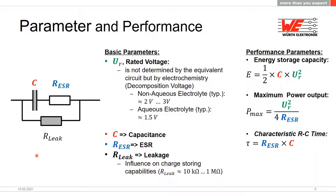The main parameters for an energy storage device are charging and discharging times, as well as power and energy capacity. The rated voltage defines the output power and is limited for EDLCs by the electrochemical decomposition voltage — for non-aqueous electrolytes, this is around 2 to 3 volts. Capacitance defines the energy storage possible. The ESR defines the maximum power output, and isolation resistance defines the charge-storing capability and self-discharge.